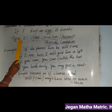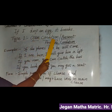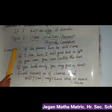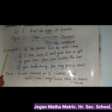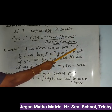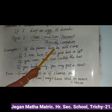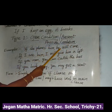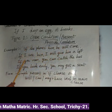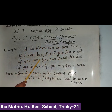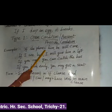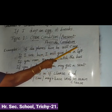Now Type 1: open condition, also called present possible or present probable condition. For example, 'If she phones him, he will come.' Here, 'phones' is present tense in the if-clause, and 'will come' is future tense in the main clause.